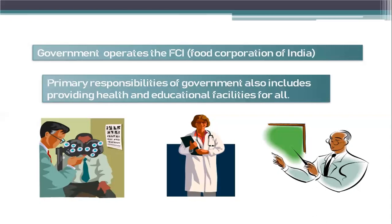Besides all this, the government also plays a major role in the service sector and employment generation. In India, 61% of the working population is engaged in the primary sector, 22% in the service sector, and only 17% in the secondary sector. Although the service and secondary sectors contribute a large percentage to GDP, they have not been able to generate sufficient employment. In the absence of opportunities in secondary and tertiary sectors, people are forced to earn their livelihood in the primary sector.